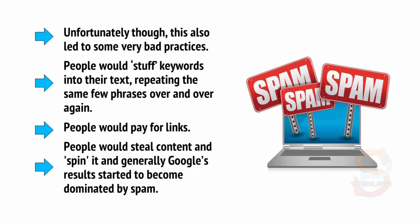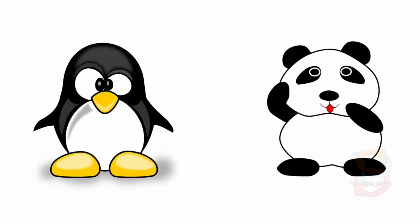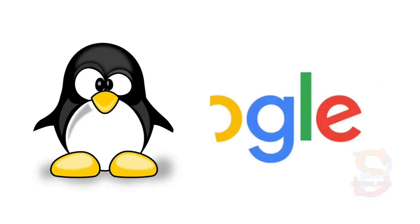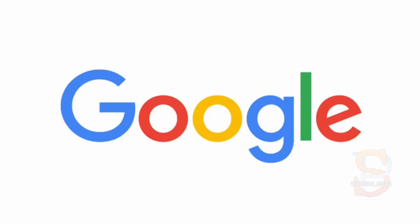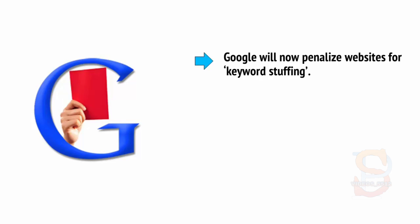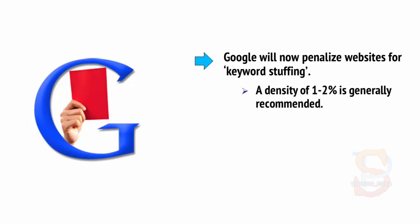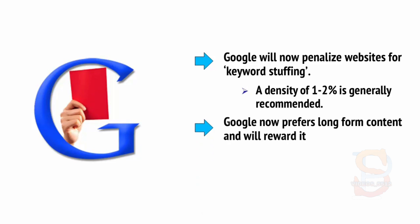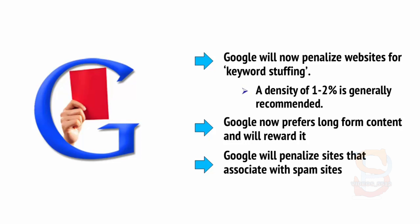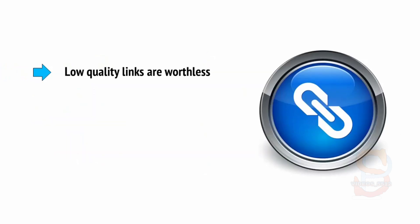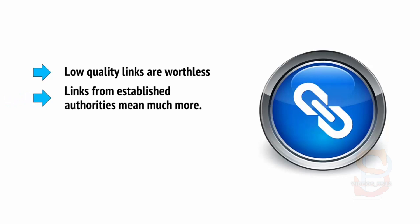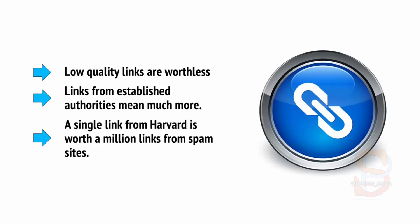So Google clamped down and introduced some smarter rules and algorithms. These updates to its system were known as Penguin and Panda, and really shook up the internet marketing community. Now Google is much smarter when it comes to looking for content, and now values quality over quantity to a large degree. A few examples of the changes: Google will now penalise websites for keyword stuffing — a density of 1-2% is generally recommended. Google now prefers long-form content and will reward it. Google will penalise sites that associate with spam sites. Low-quality links are worthless, while links from established authorities mean much more. A single link from Harvard is worth a million links from spam sites.